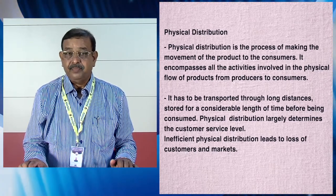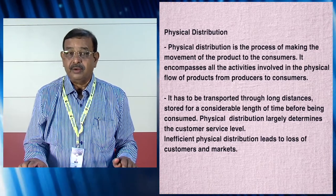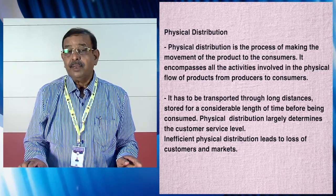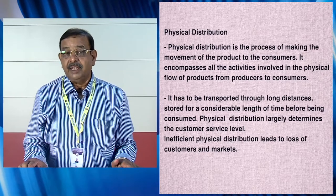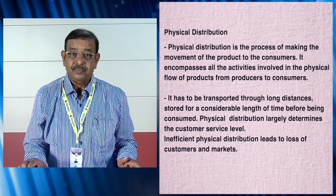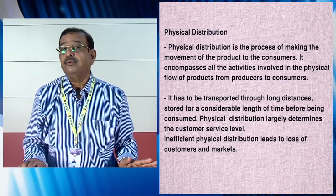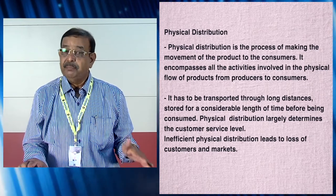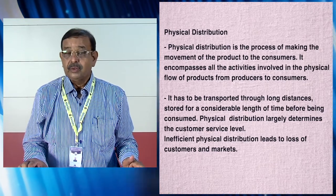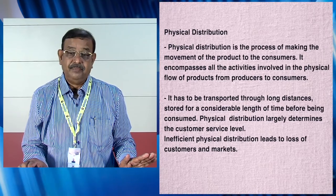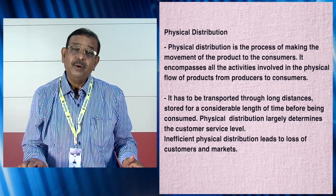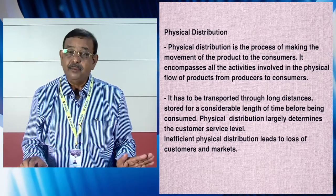For example, companies may have their factories near Mumbai, Thane, Baddi in Himachal Pradesh, or Pantnagar in Uttarakhand, while demand may exist in Dibrugarh or Imphal. Products have to be transported from Pantnagar or Baddi to points of consumption perhaps 100 kilometers away, across long distances using railways and roads, and may need to be stored for a considerable length of time before being consumed. Physical distribution largely determines customer service level — inefficient physical distribution leads to loss of consumers and markets.